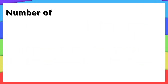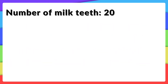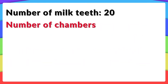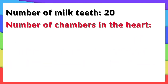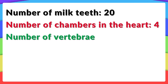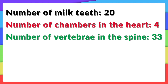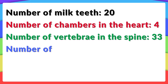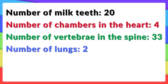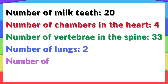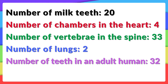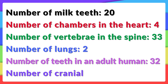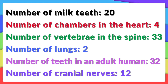Number of milk teeth: 20. Number of chambers in the heart: 4. Number of vertebrae in the spine: 33. Number of lungs: 2. Number of teeth in an adult human: 32. Number of cranial nerves: 12.